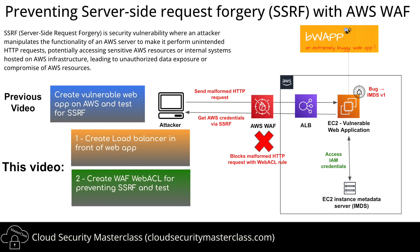In SSRF, an attacker tricks the functionality of a web server and makes the server do unintended actions. Like in the case of AWS, this might involve making the web server reach out to the EC2 instance metadata server, or the IMDS server. That's the attack pattern we are going to demo in this video and see how AWS WAF could be used to prevent this attack from happening.